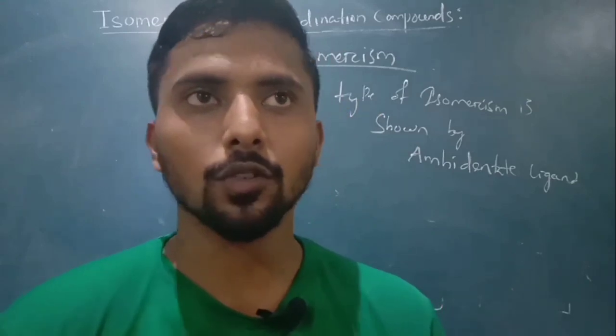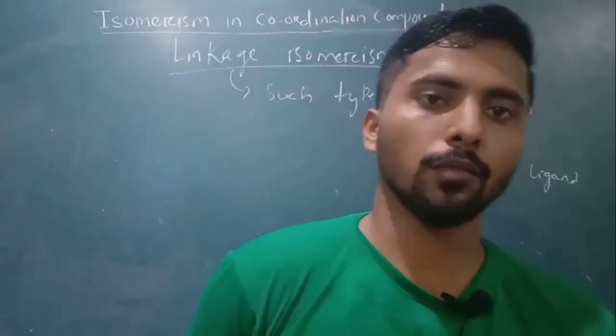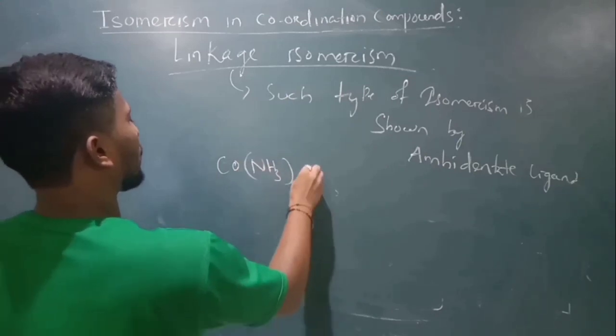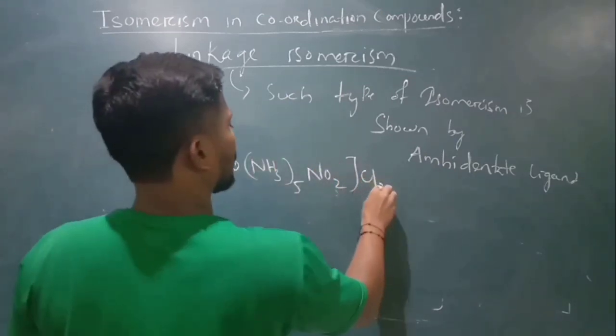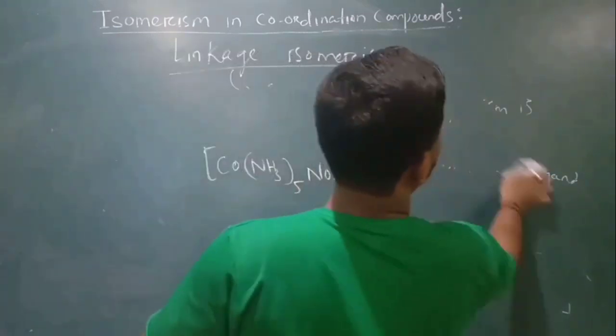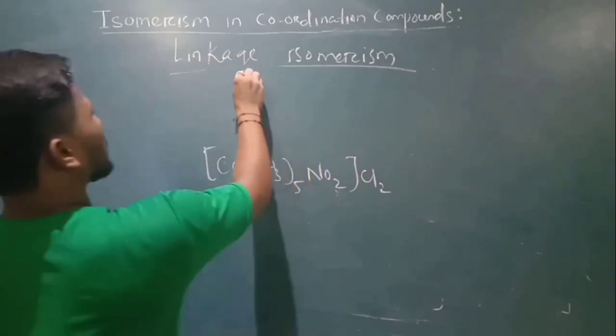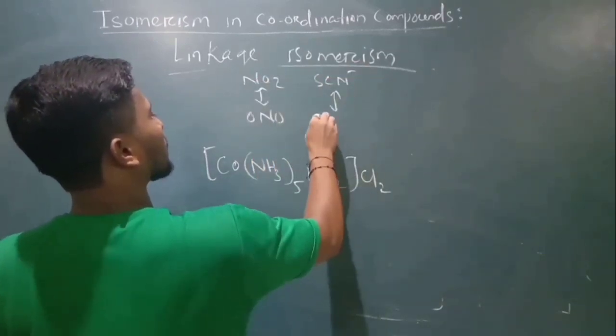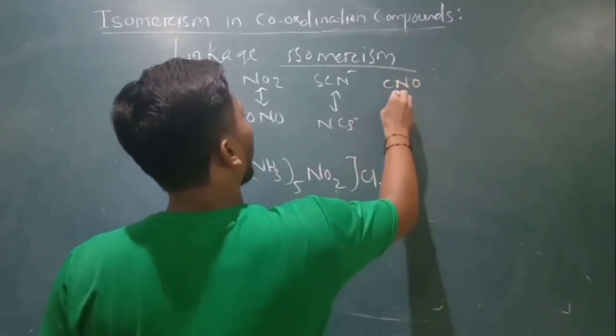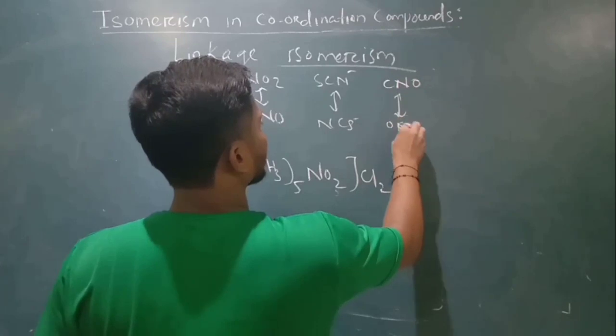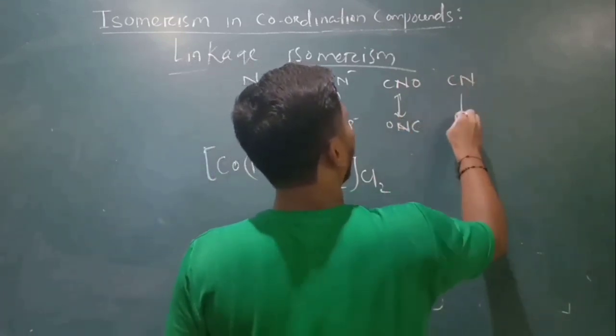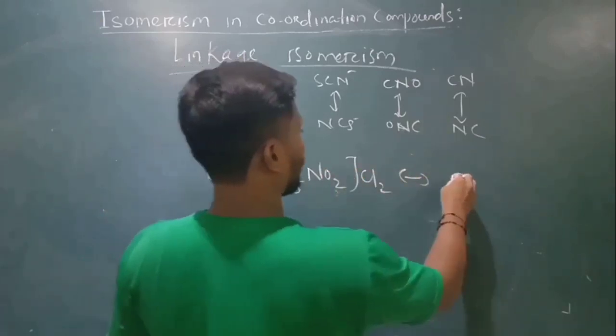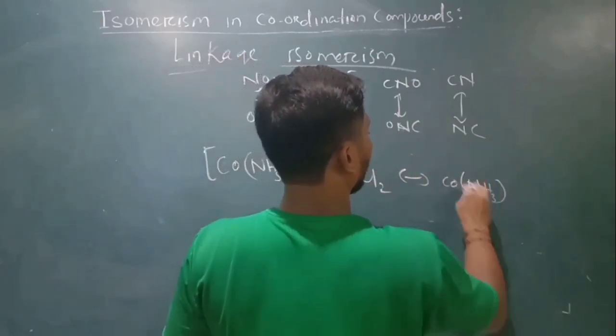For example, [Co(NH3)5(NO2)]Cl2 shows linkage isomerism. NO2 is an ambidentate ligand that can coordinate through nitrogen or oxygen. It can also form with cyanate: CNO as cyanate or isocyanate ONC.